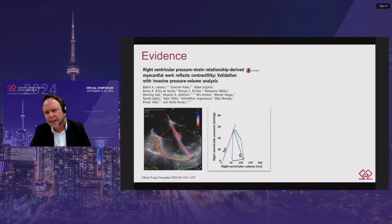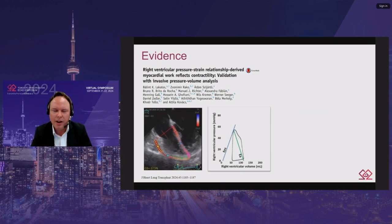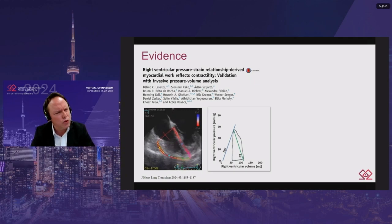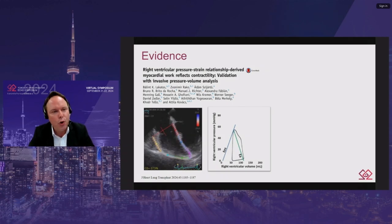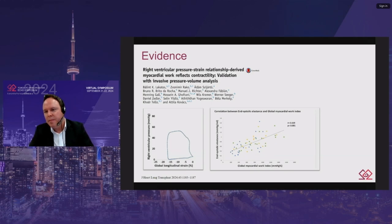Let's consider the pathophysiological meaning of strain analysis. A recent study from Budapest included 60 patients undergoing RV pressure-conductance catheterization alongside RV strain and 3D echocardiography. The authors showed that RV longitudinal strain reflected RV-arterial coupling, while the pressure-strain relationship reflected contractility of the right ventricle in their patient population, using commercially available software from GE Healthcare.